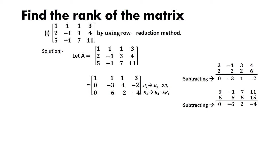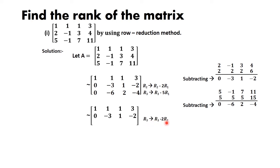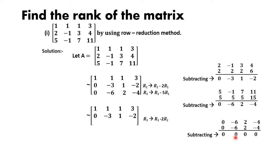Row echelon form requires the first row's first element to be non-zero and zeros below it in a triangular pattern — the second row's first element is 0, and the third row's first two elements should be 0. Here, the third row's second element is non-zero, so I apply the operation R3 = R3 - 2R2. Writing R3 [0, -6, 2, -4] and multiplying R2 by 2 gives [0, -6, 2, -4]. Subtracting gives [0, 0, 0, 0], so R3 becomes [0, 0, 0, 0].